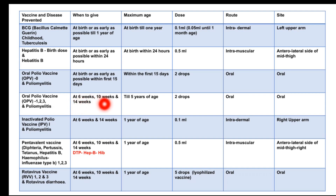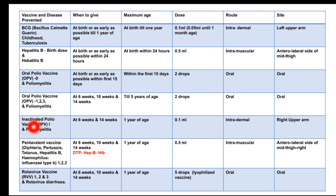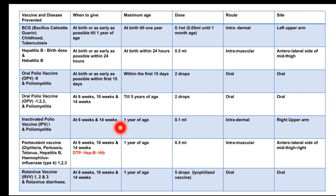OPV is given at the 6th, 10th, and 14th week for protection against poliomyelitis till 5 years of age, again as 2 drops via the oral route. The Inactivated Polio Vaccine (IPV) gives protection against poliomyelitis at the 6th and 14th week, up to 1 year of age. The dose is 0.1 ml, given intradermally in the right upper arm.